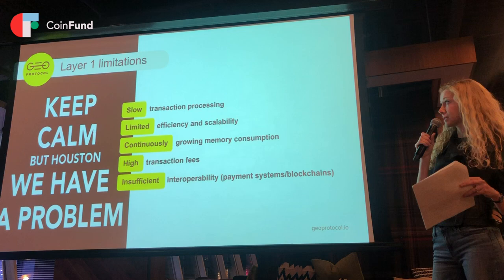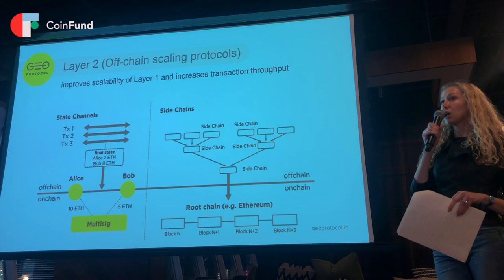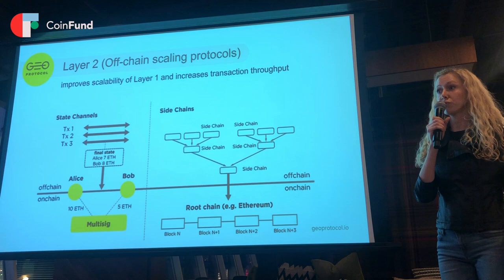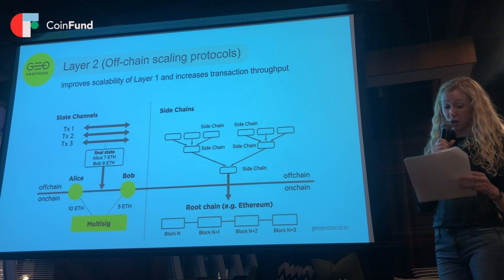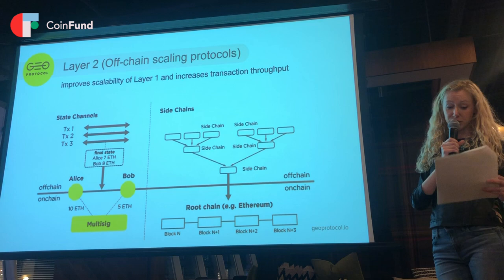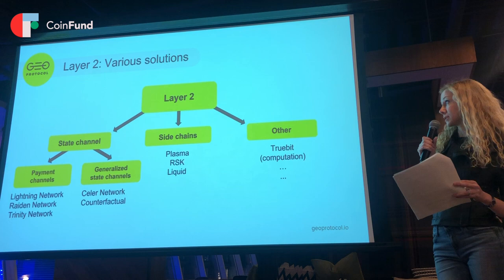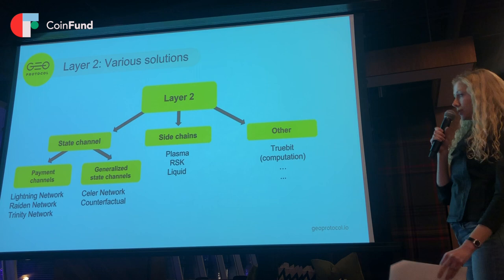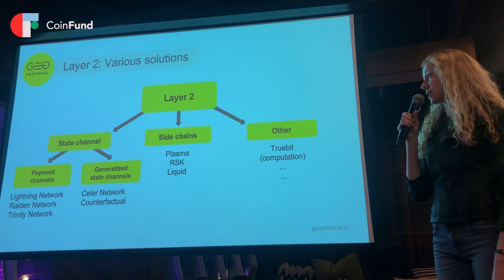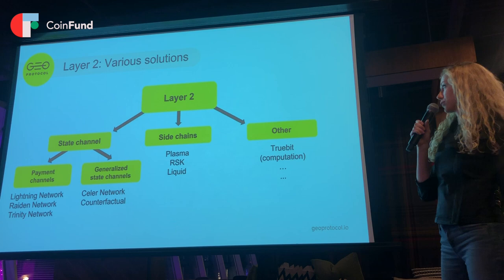Layer two is an off-chain structure built above the baseline, above layer one technologies, and is designed primarily to solve the scalability problem. Most proposed solutions involve either state channels or side chains to address this problem. The major benefits include increased productivity, reliability, as well as trustless operations. Examples of layer two technologies using state channels include Lightning Network, Raiden, Trinity, and Counterfactual. Examples using side chains include Plasma, RSK, and Liquid.